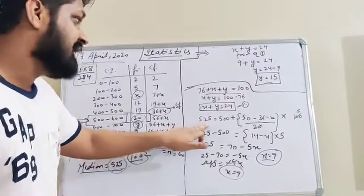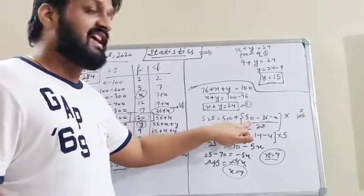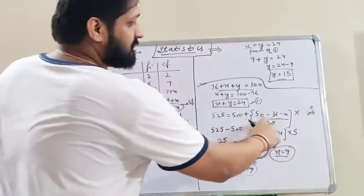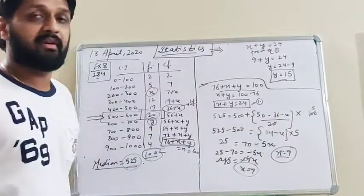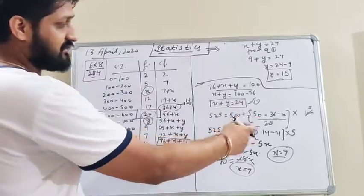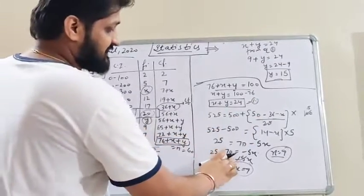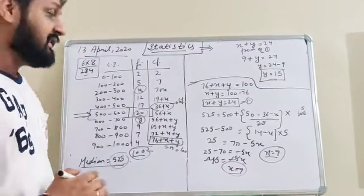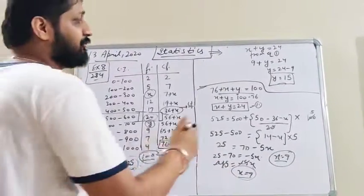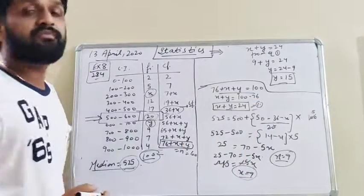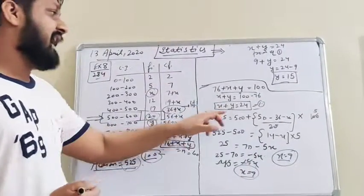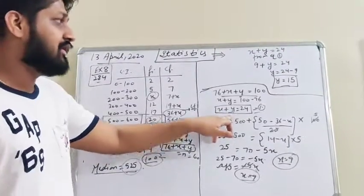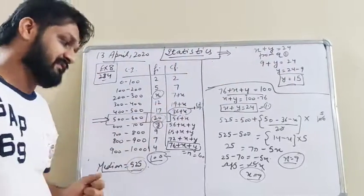Then we put all the values into the median formula. The lower limit is 500, n/2 is 100 divided by 2, the cumulative frequency is 36 plus x. After simplification, 25 minus 70 equals minus 45, so 45 equals 5x and x equals 9. Putting x equals 9 into equation 1, we find y equals 24 minus 9, so y equals 15.